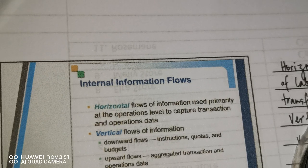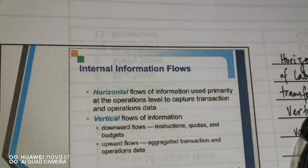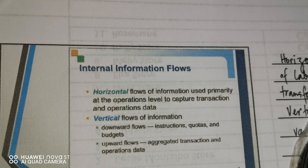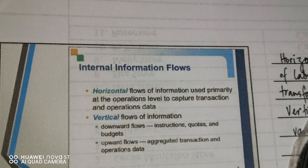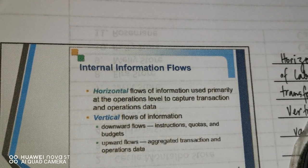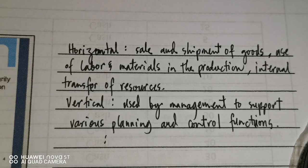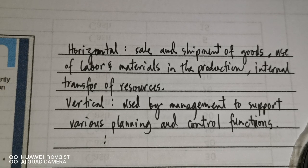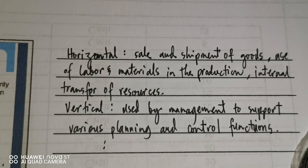Internal information flows are both horizontal and vertical. The horizontal flow is the information used primarily at the operations level to capture transaction and operations data — for example, sale and shipment of goods, use of labor and materials in production, and internal transfer of resources. Within one level, they share information among themselves.